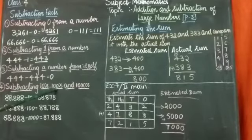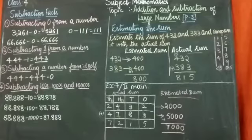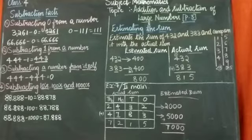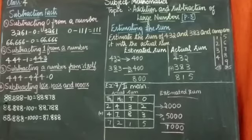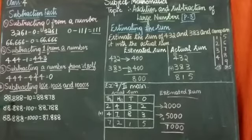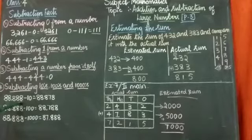Subtracting tens, hundreds and thousands. They may give you in the examples or in the exercises: subtract 100 from this digit, subtract 1000 from this digit. You will be thinking how to subtract so much number? Here is an easy trick. Here I have a number 88,888. They are telling you to subtract tens. Observe the tens digit here.